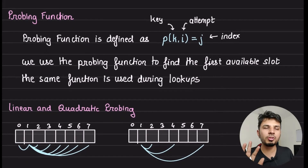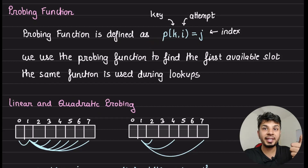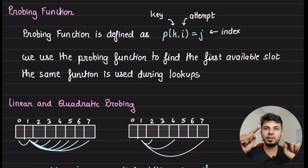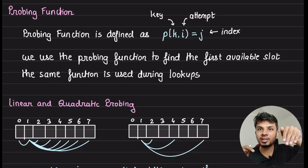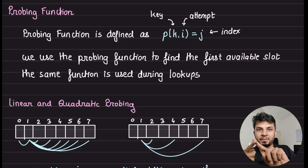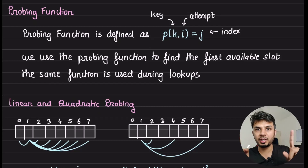If there is a collision, we try to find a free slot where we can place our key. We use something called a probing function. The probing function is defined as p(k, i) where k is the key and i is the attempt number. We start with attempt 0 to get the first primary slot, then if that slot is not empty we increment i from 0 to 1, and so on until we look up all m slots of the table.